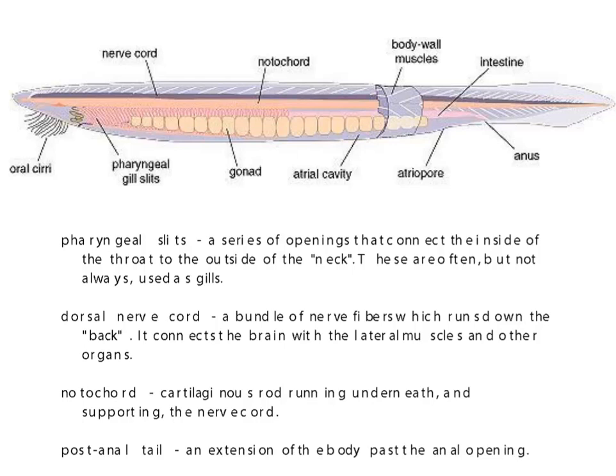The third characteristic is a notochord — write this down, because you're going to see this again. It's a rod that runs underneath and supports the nerve cord. This appears in all vertebrate embryos but no longer functions in body support and movement. Last but not least, we have what's called the post-anal tail — an extension of the body past the anal opening. If you've ever broken your tailbone, you know exactly how uncomfortable that is, and that's why we fit into this particular group.